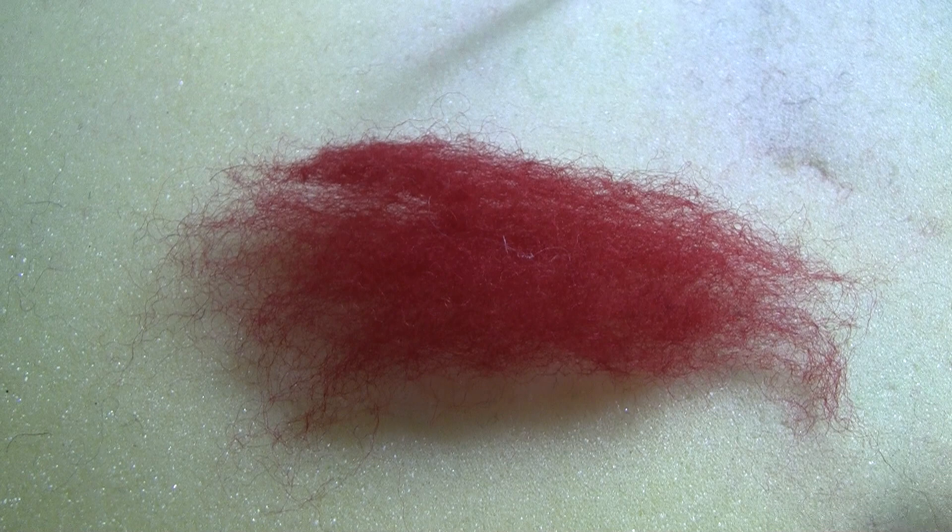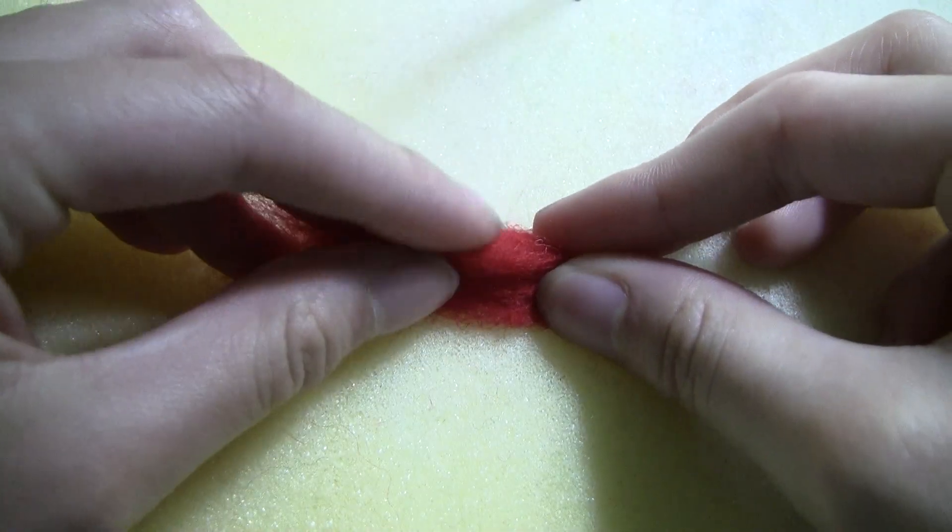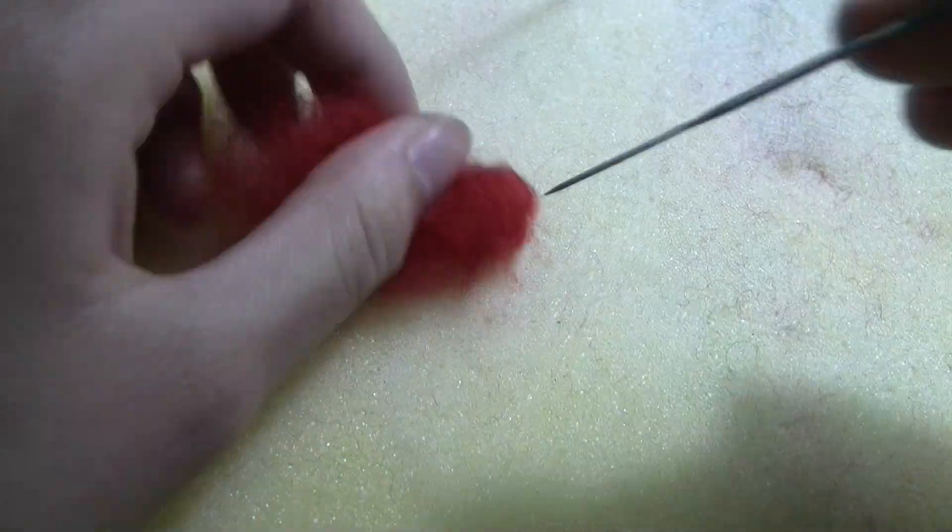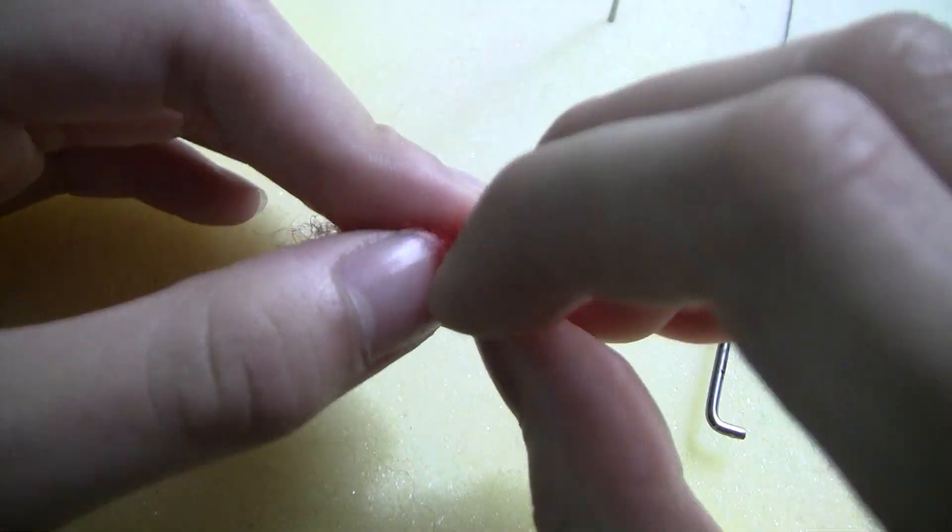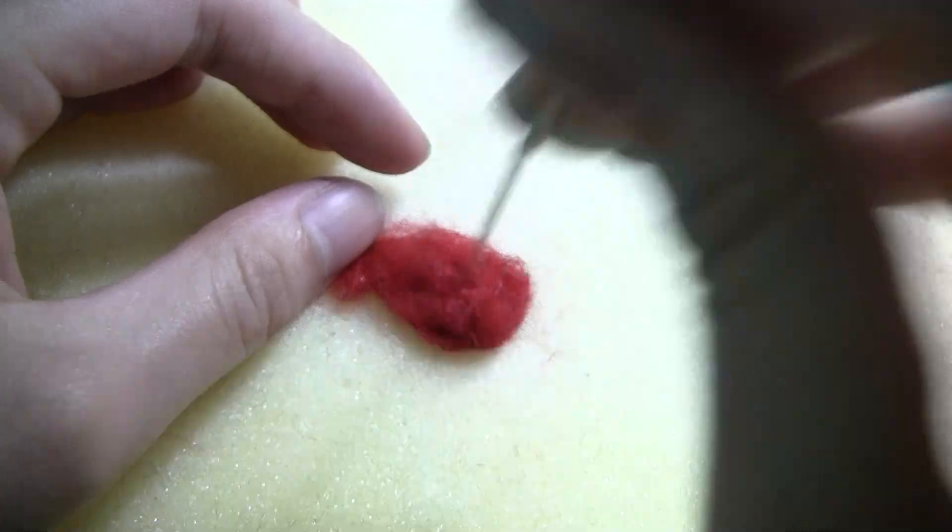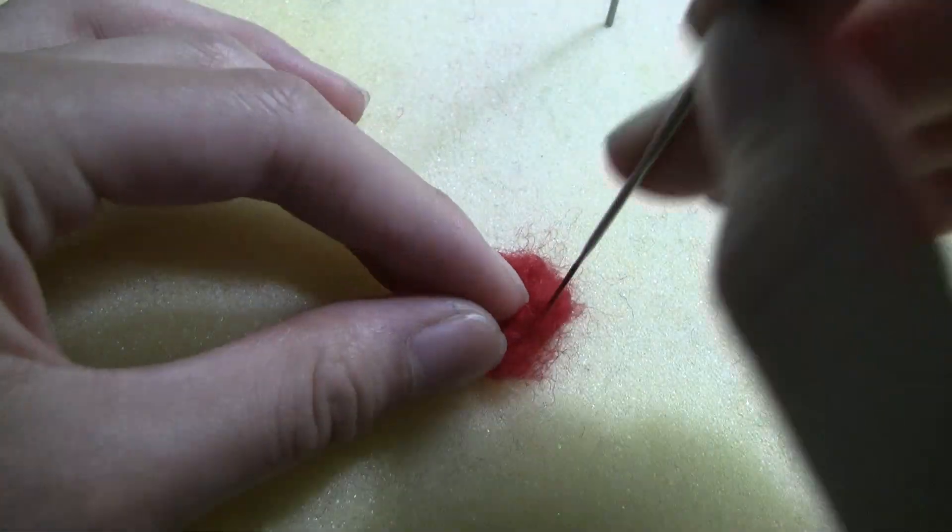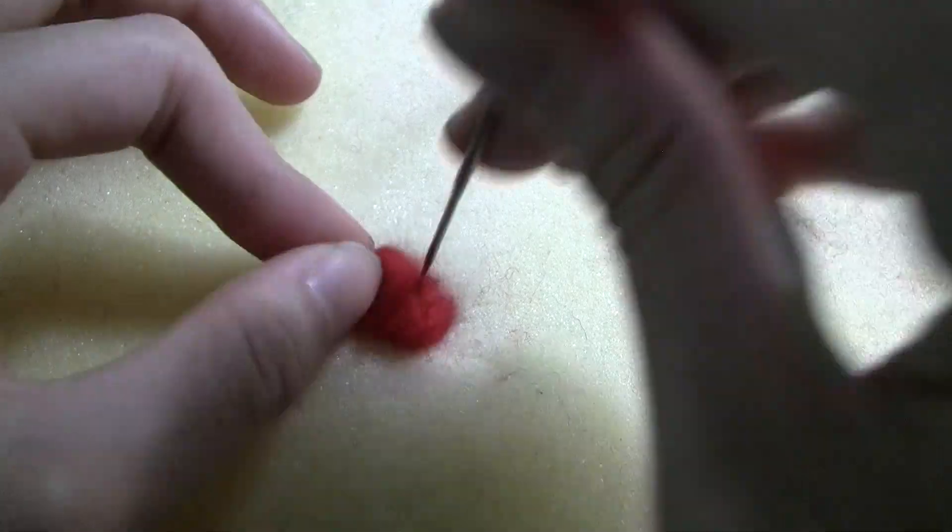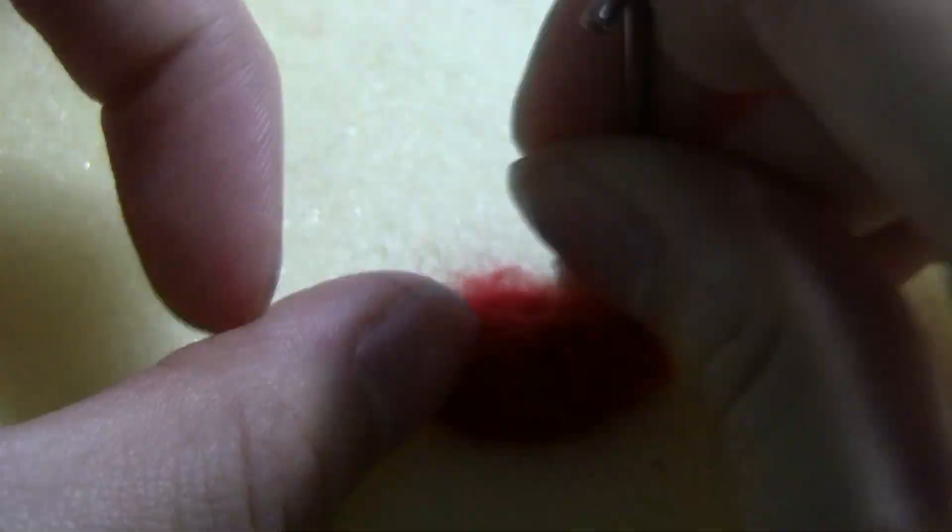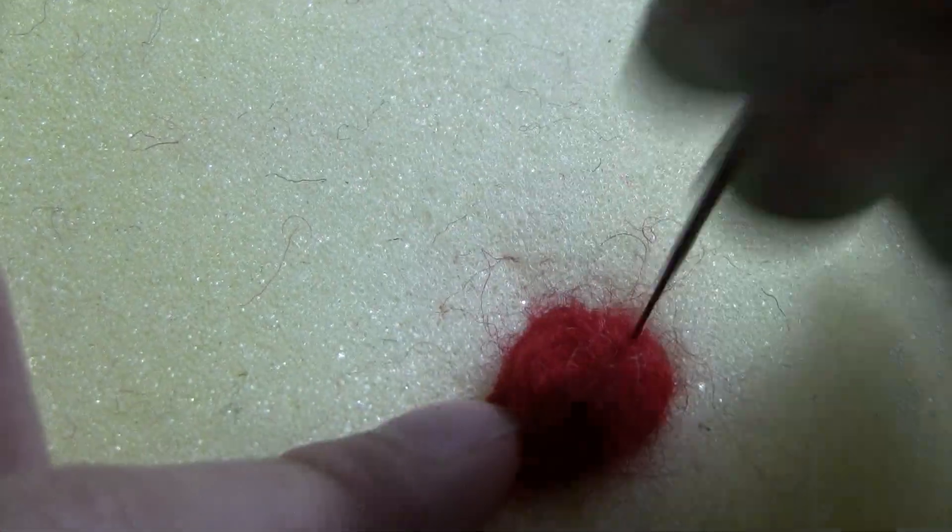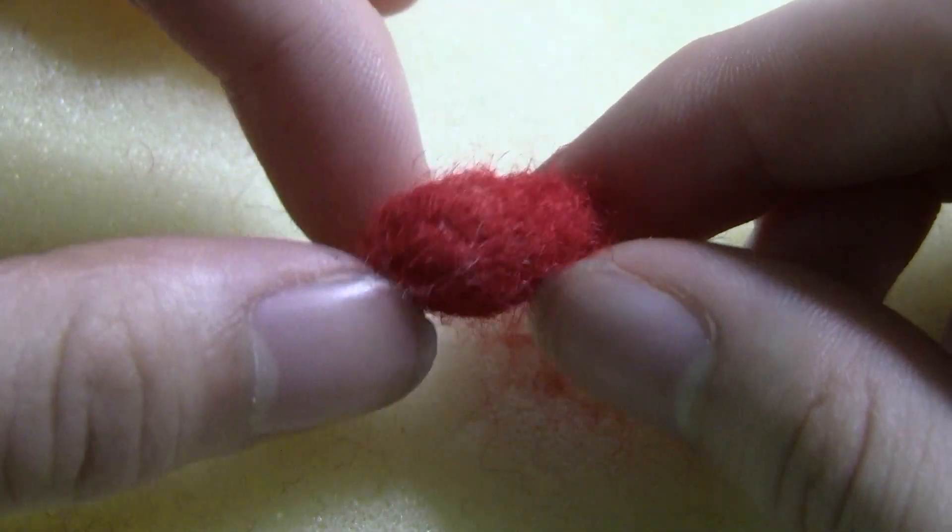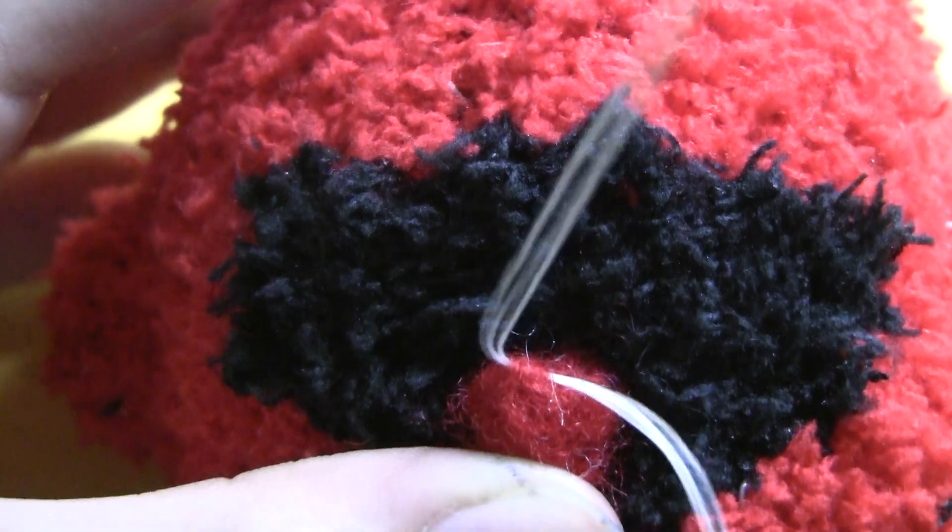Now we're going to needle felt the beak. If you don't know how to needle felt, there are a lot of other alternatives you can use to make the beak and they'll be listed in the description box below. Fold a bit of red felting wool in half and felt the tip. Then fold the wispy end around the felted end and felt it into a beak shape. When you needle felt, the ends are usually left wispy to attach onto other felted pieces, but since we're sewing it on, you'll want to felt all sides really well.